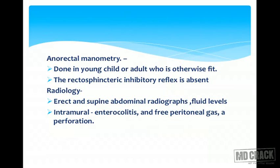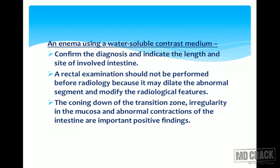The second diagnostic tool is anorectal manometry, done in young children or fit adults, where the rectosphincteric inhibitory reflex is absent. Radiologically, erect and supine abdominal radiographs show air-fluid levels indicating obstruction, intramural gas indicating enterocolitis, or free peritoneal gas indicating perforation. A barium enema using water-soluble contrast medium confirms the diagnosis and indicates the length and site of involved intestine.